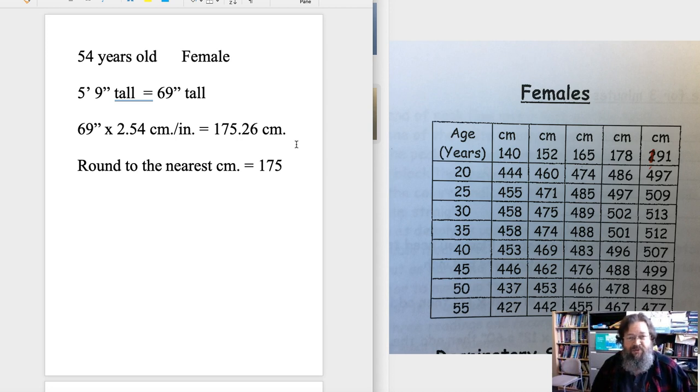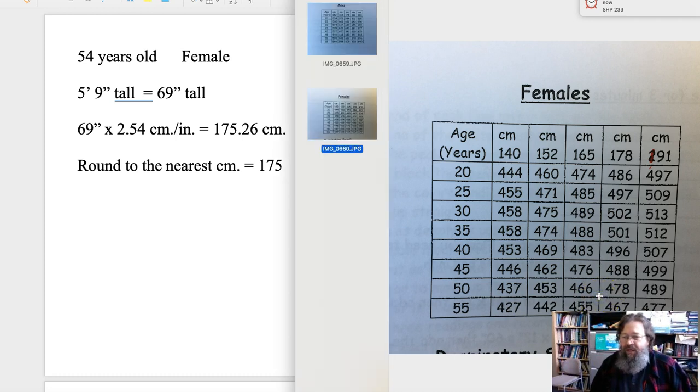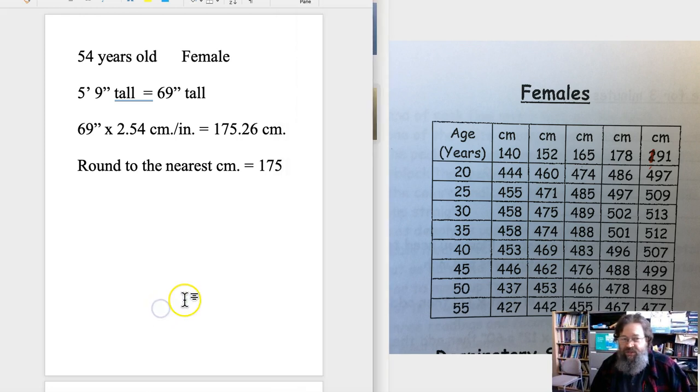We can round that to the nearest centimeter. We're really not being more accurate than the nearest centimeter when measuring people's height. So if this person is 175 centimeters tall, notice there isn't a column for 175 centimeters. Notice also because this person is 54, we don't have a row for 54 years old. We've got a row for 50 and a row for 55, so we know the answer is going to be somewhere in this region but we don't know exactly where, and we use extrapolation to find out.